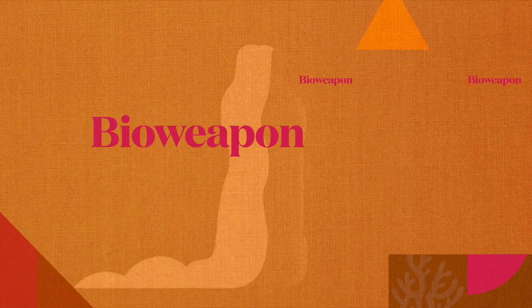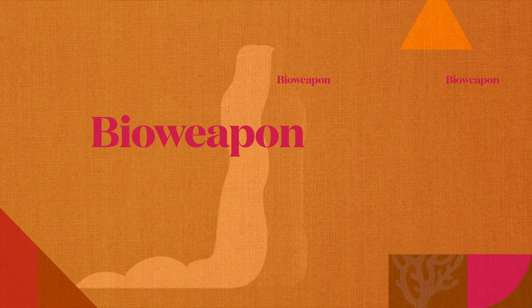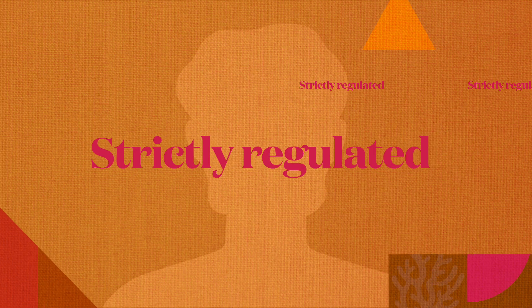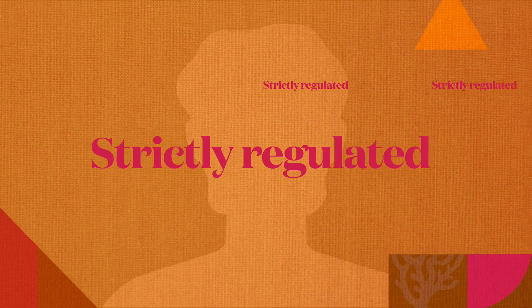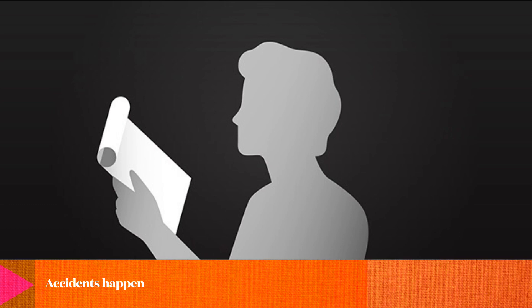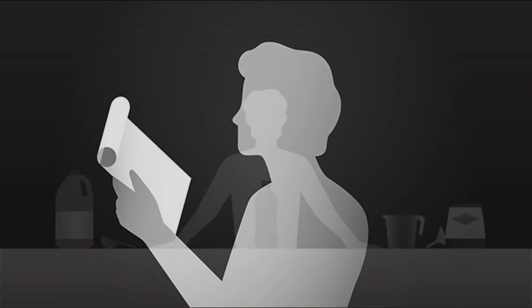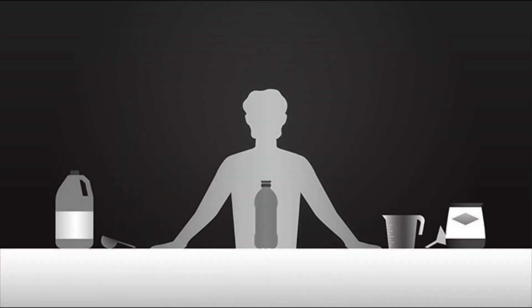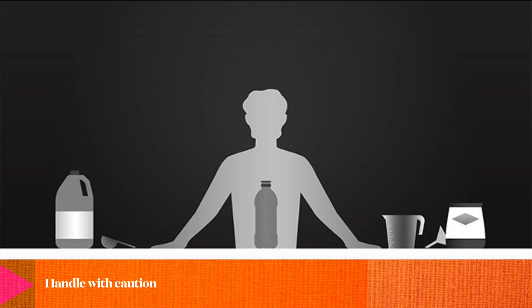Today, ricin is considered a potential bioweapon and its possession and use are strictly regulated. However, it is still found in nature and accidental poisonings have occurred. It is important to remember that ricin is a deadly poison and should be handled with extreme caution.